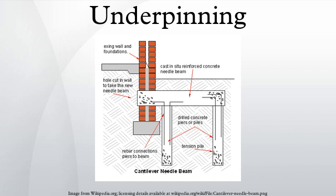Mini-piles have the greatest use where ground conditions are very variable, where access is restrictive, where environmental pollution aspects are significant, and where structural movements in service must be minimal. Mini-piled underpinning is generally used when the loads from the foundations need to be transferred to stable soils at considerable depths, usually in excess of 5 m.